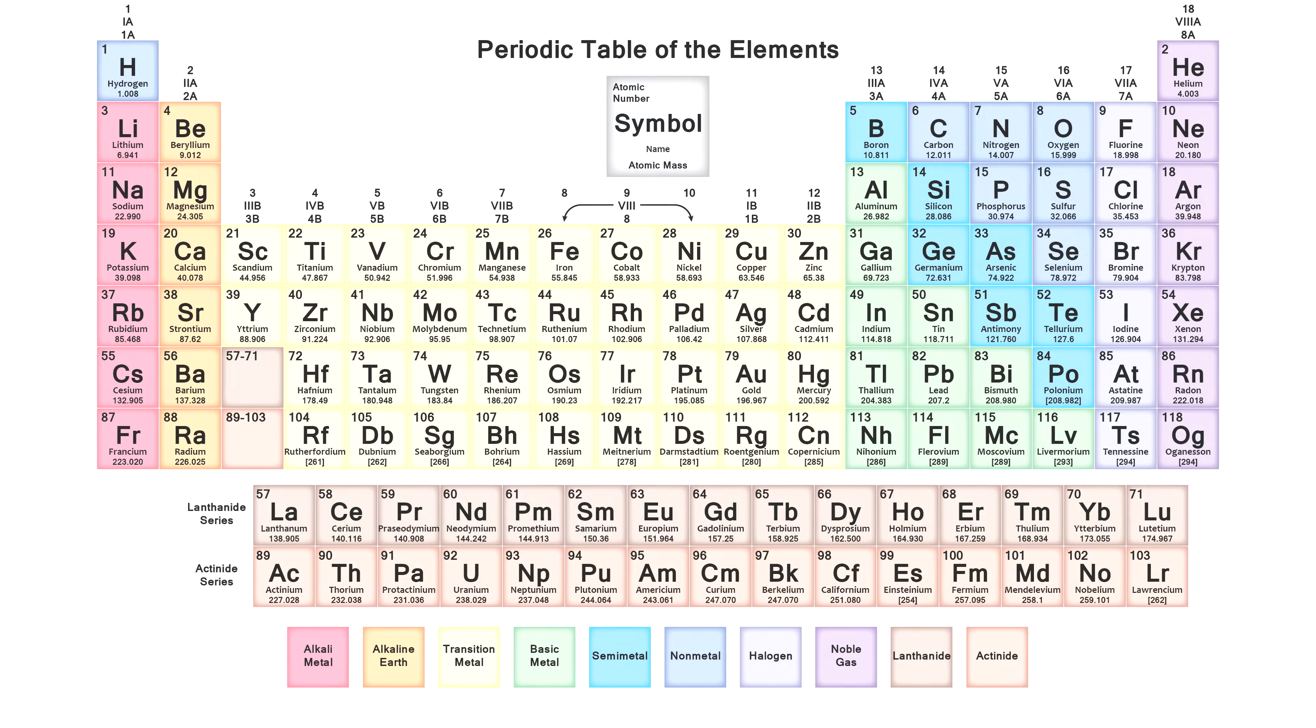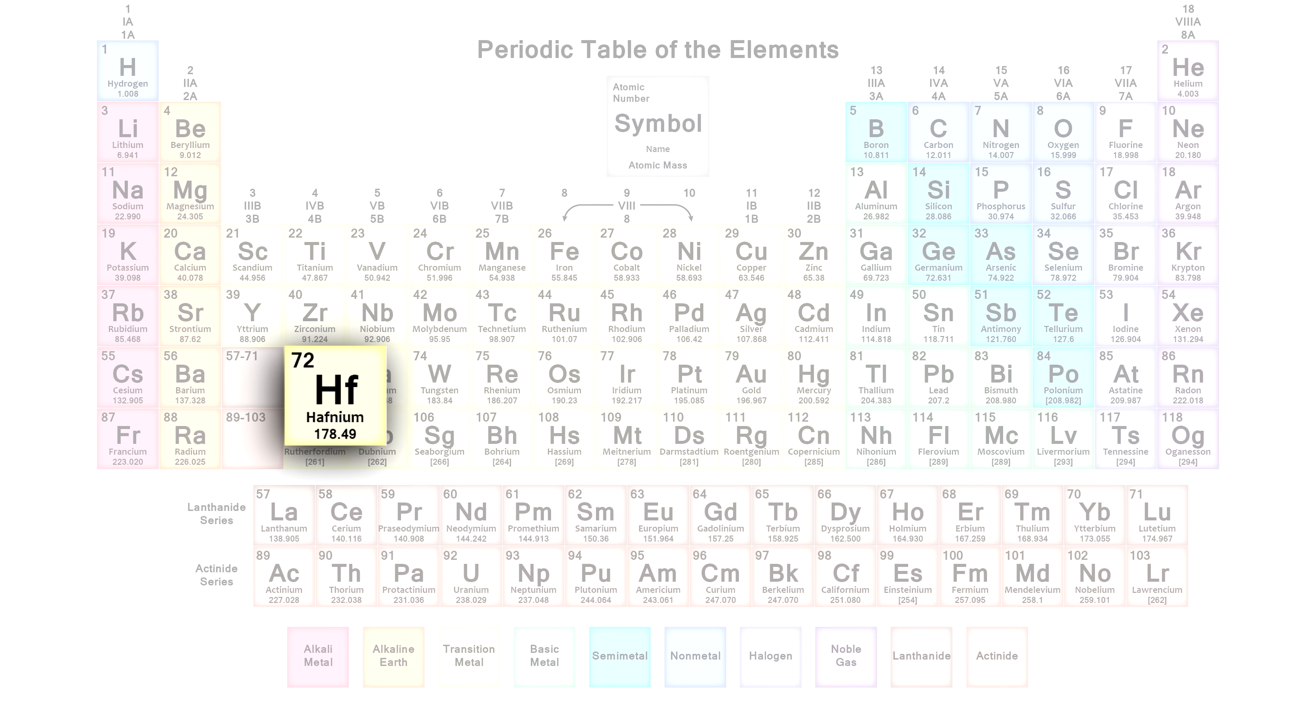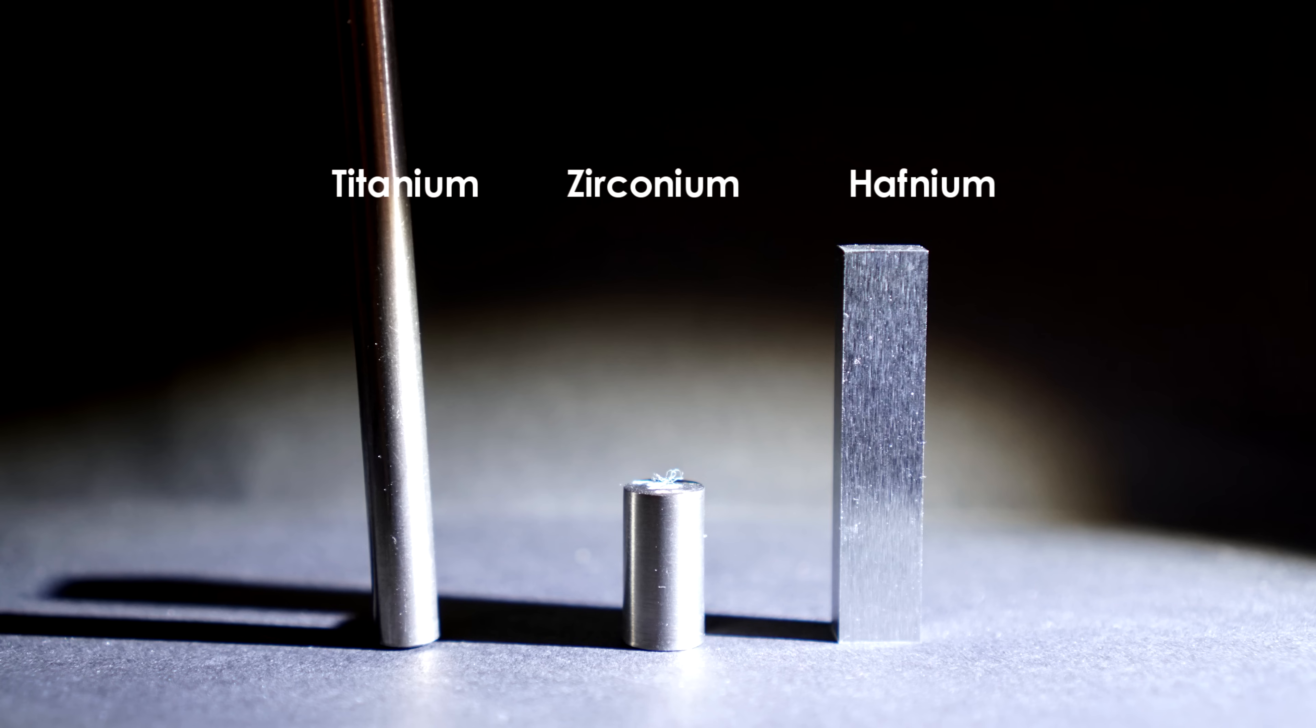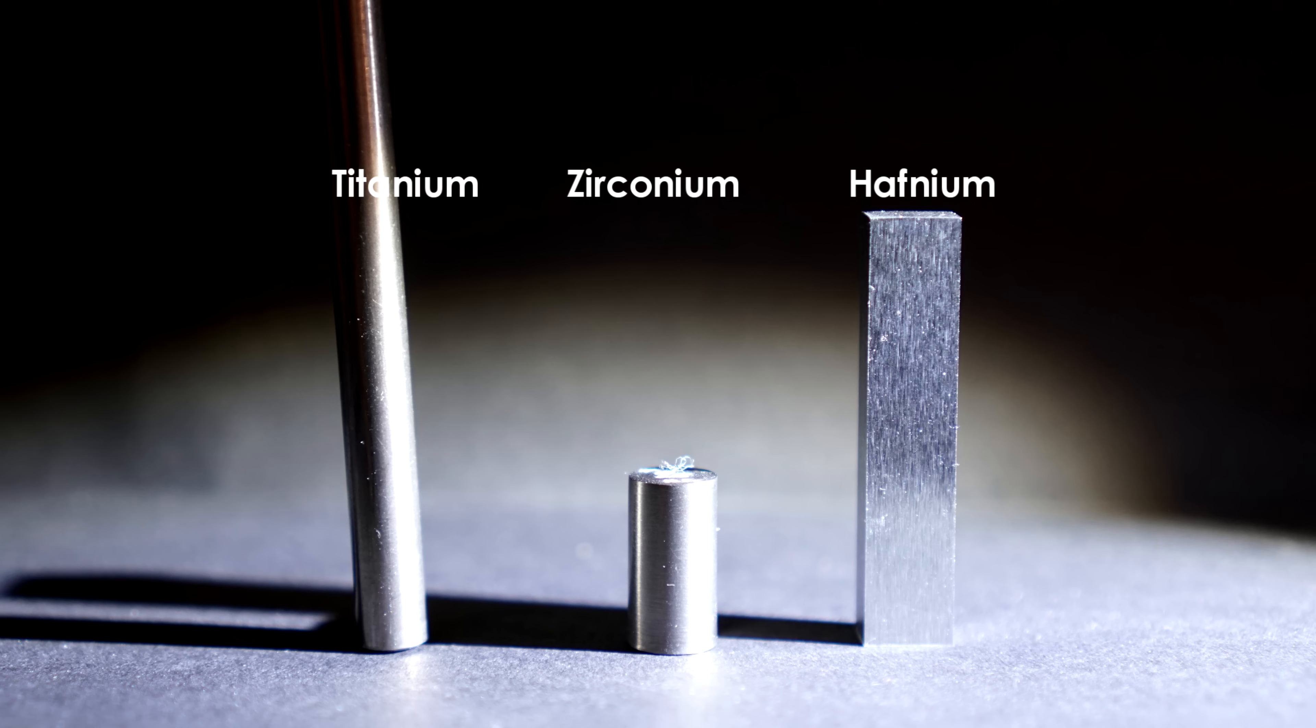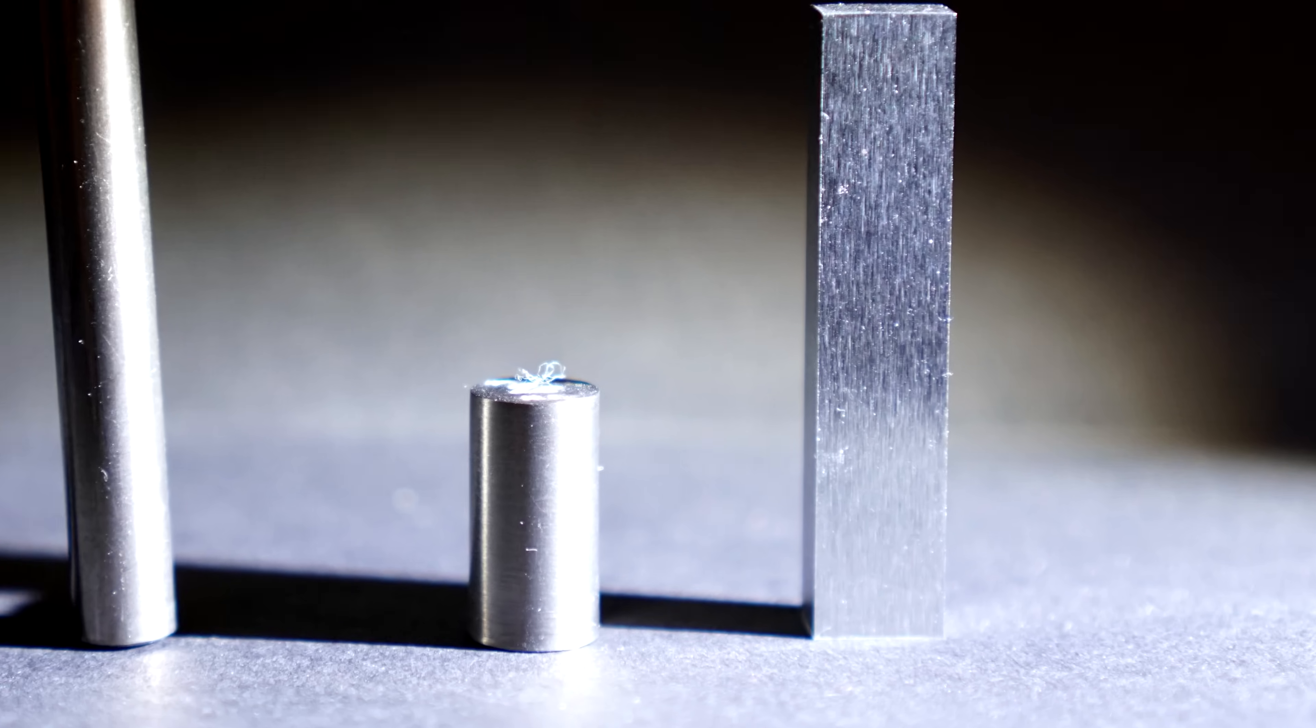If you look at the periodic table, you'll see that hafnium is located at the bottom of group 4 along with zirconium and titanium. It's there not accidentally, because all three metals share common chemical properties, especially zirconium and hafnium.